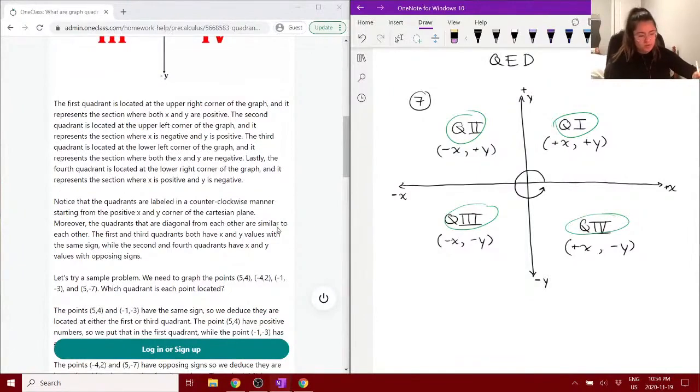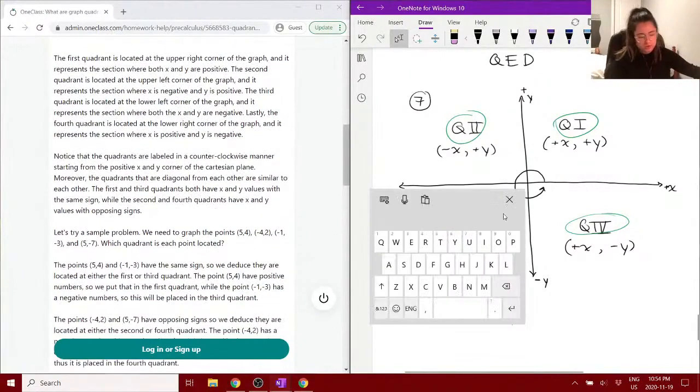So, we notice that we label these in a counterclockwise manner. So, starting from our quadrant one, sorry, quadrant one, we have positive x and positive y.